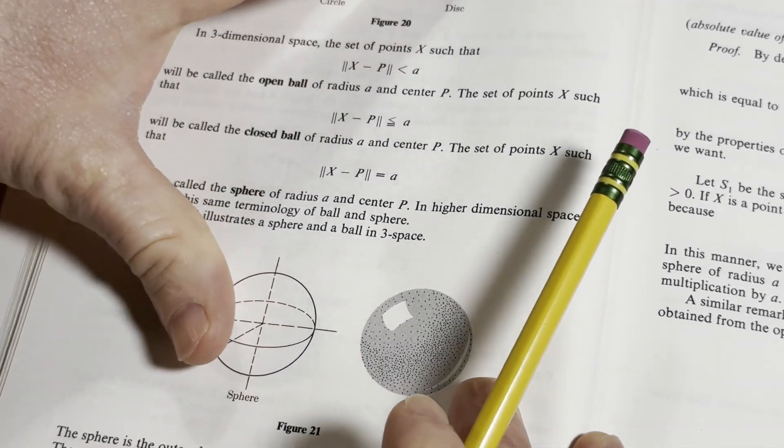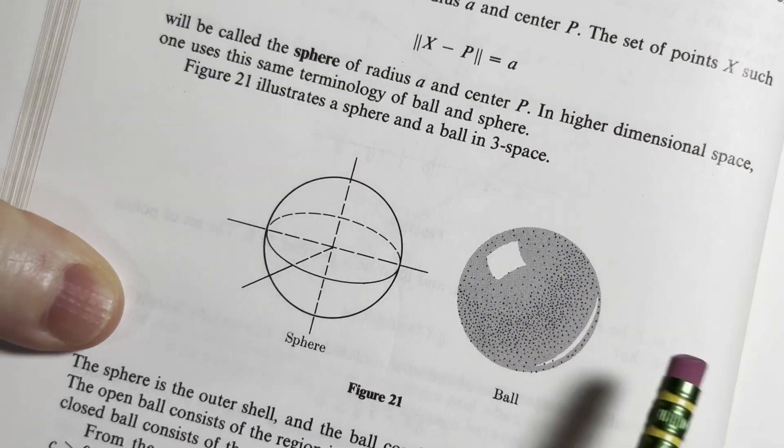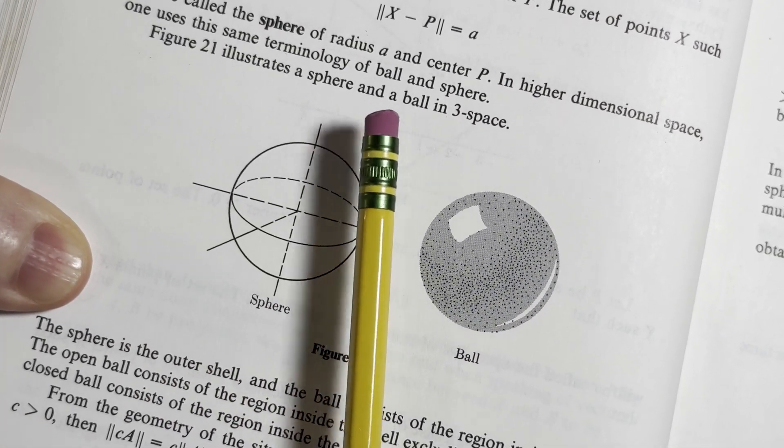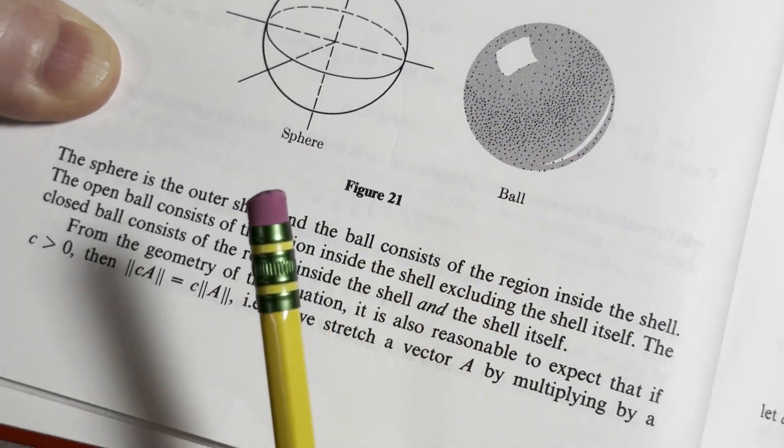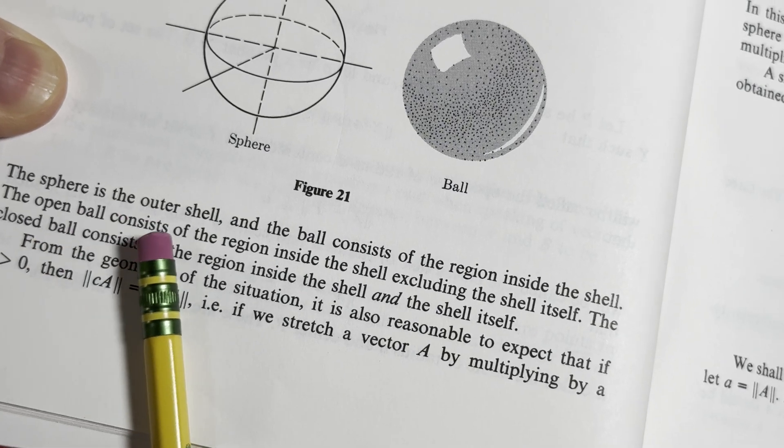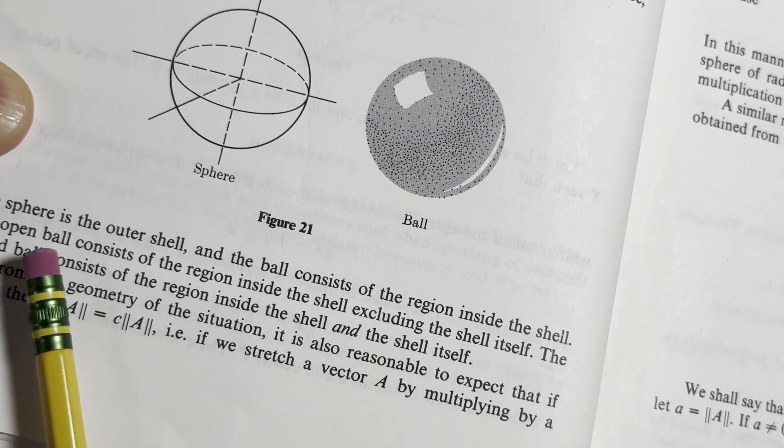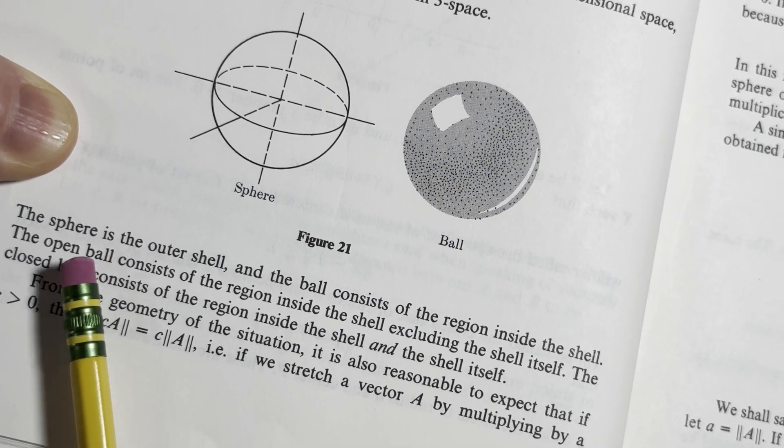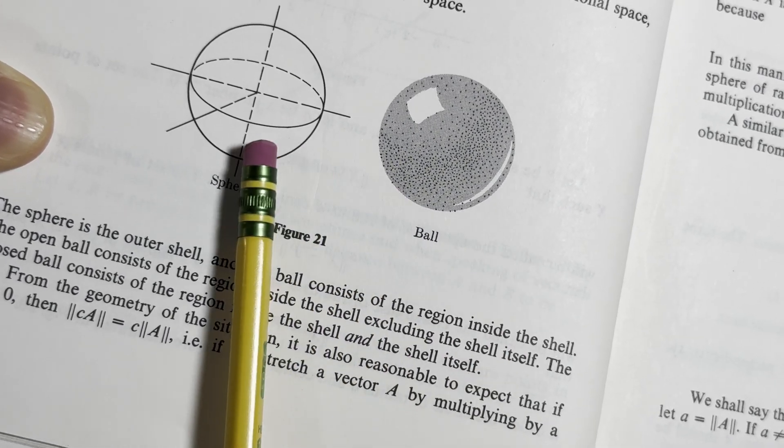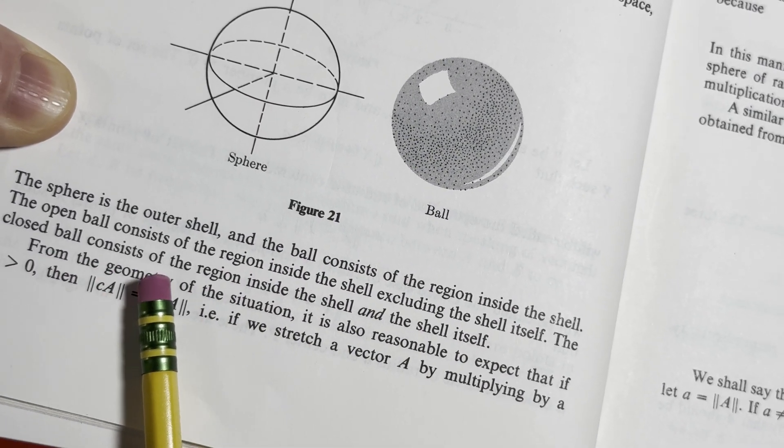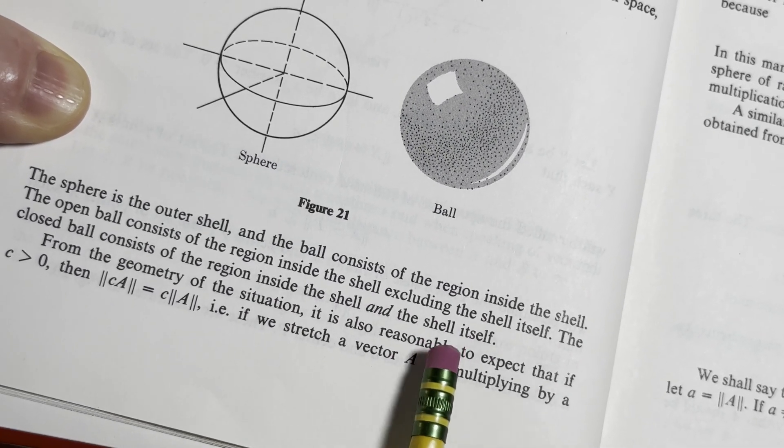It's one of the reasons I love this book. And then here's a picture. It says figure 21 illustrates a sphere and a ball in three spaces. So here's the sphere. And then here's the ball. This is very important as well. The sphere is the outer shell and the ball consists of the region inside the shell. The open ball basically doesn't include the sphere. The open ball consists of the region inside the shell, excluding the shell itself, so excluding the sphere. The closed ball consists of the region inside the shell and the shell itself, the actual shell itself.